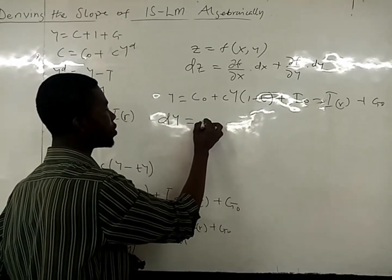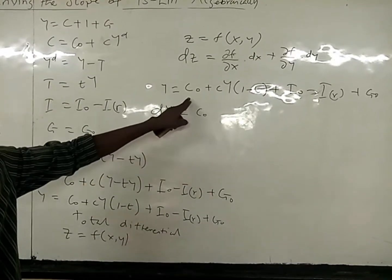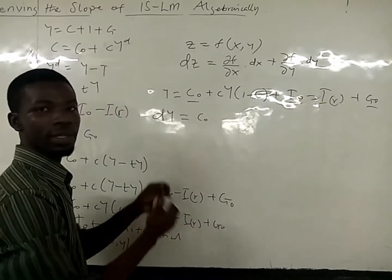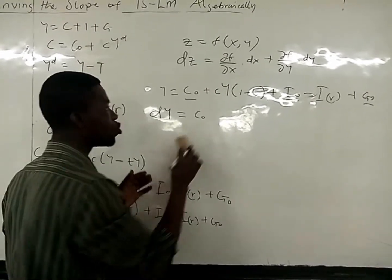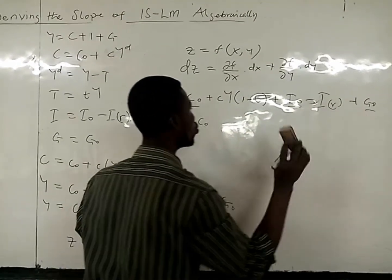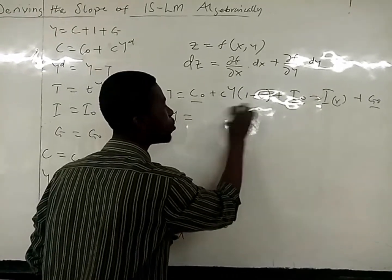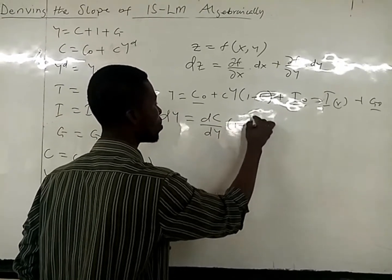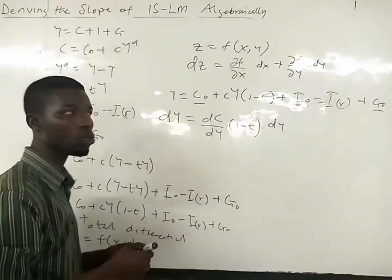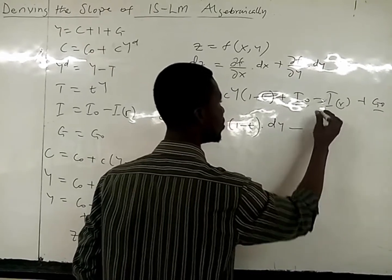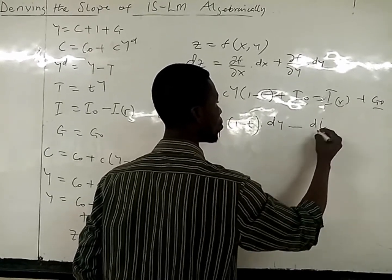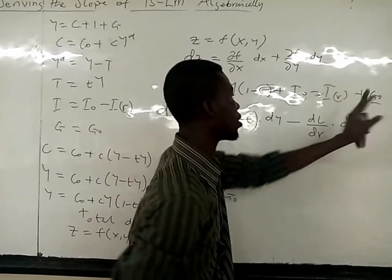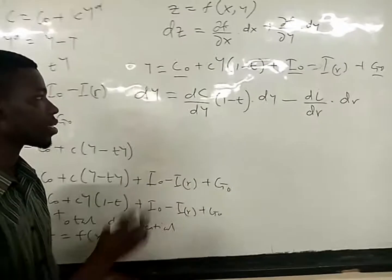Differentiating this function — since C₀ and G₀ are constants, their differentials are zero and drop out. So differentiating, we get: dY = cy(1 − t) dY minus the derivative of investment with respect to r, times dr. The constants all give zero.